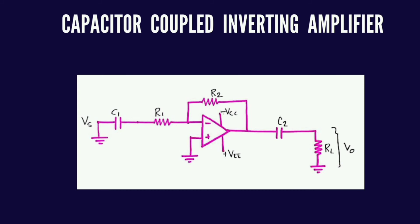Now, capacitor coupled inverting amplifier. Previously we saw the non-inverting amplifier design; now the inverting amplifier. You can observe the circuit diagram. This inverting amplifier has capacitor C1 connected at the inverting terminal of the op-amp along with the input voltage applied to the inverting terminal. Your non-inverting terminal will be grounded. At the output, C2 is connected along with the resistor RL. Your output will be calculated at the load resistor RL.